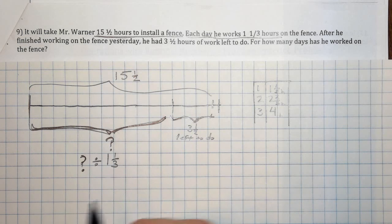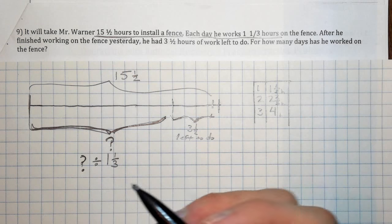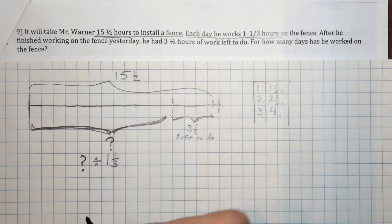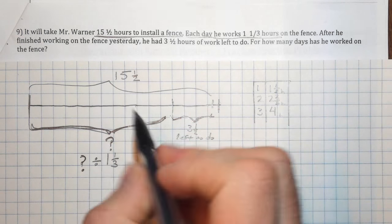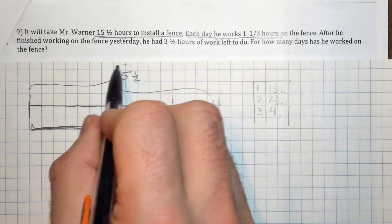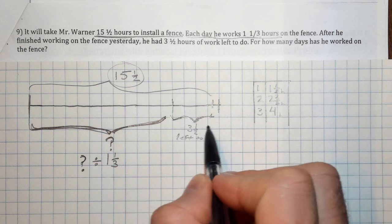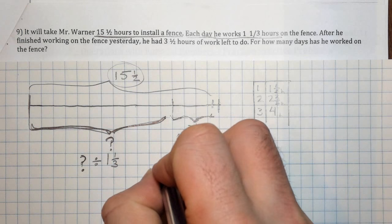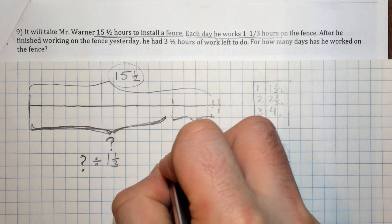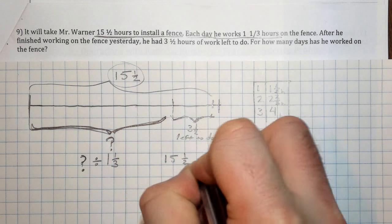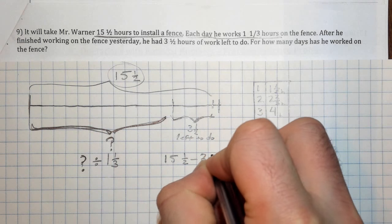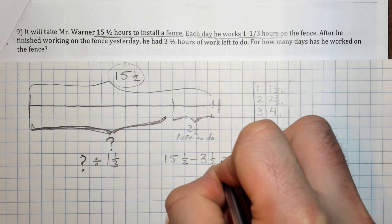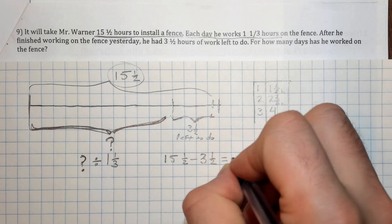Okay, I hope you paused the video. Maybe you thought there's a couple different ways that you could do it. I think the most straightforward way that most people would do it would say, okay, well, 15 and a half, the whole fence, take away this portion, and you'll get this. So we'll do 15 and one half, take away three and one half, and we will get 12.